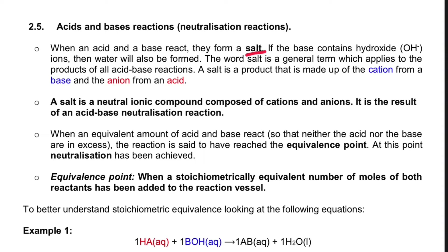A salt is a product made up of the cation from the base and an anion from the acid — cation being a positive ion and anion being a negative ion. A salt is a neutral ionic compound composed of cations and anions; it is the result of an acid-base neutralization reaction.